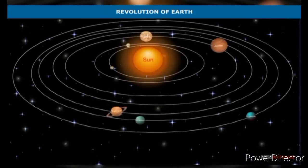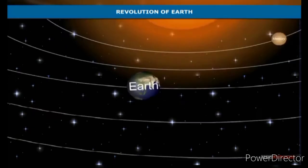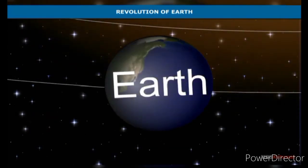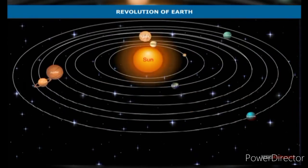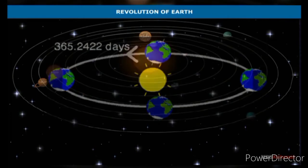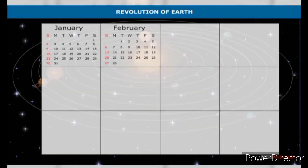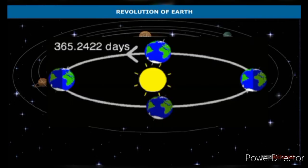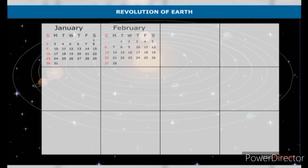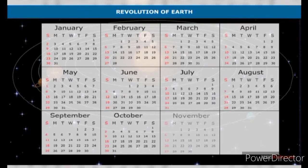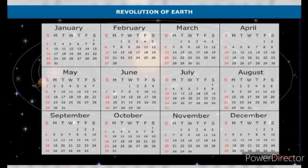While rotating on its axis in an inclined position, the earth also moves around the sun. The movement of a planet like earth around the sun is known as revolution. The earth completes one revolution in 365 days and six hours. While 365 days each of 24 hours duration make one year, the six hours are adjusted into one complete day every four years.